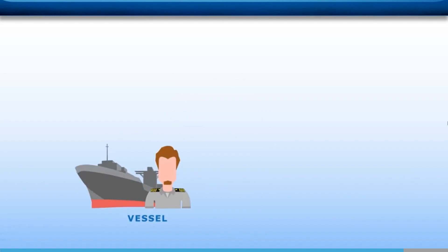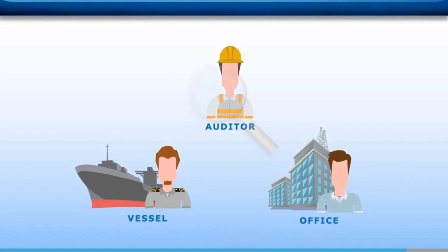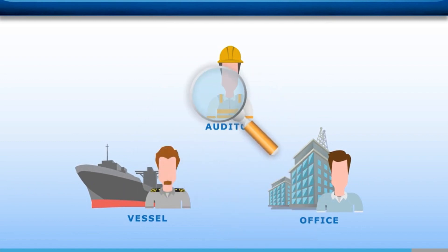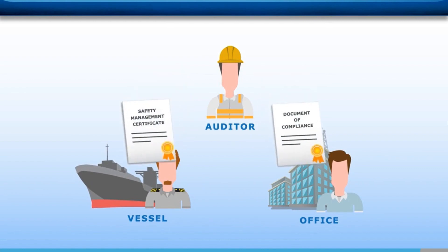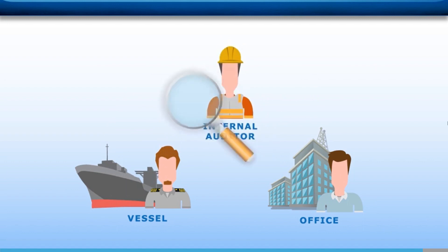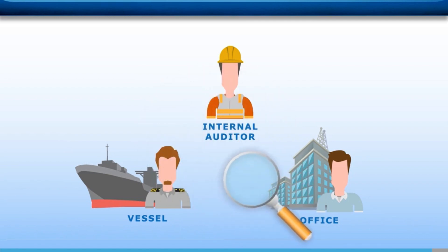Audits are formal checks that verify compliance with the ISM code. Both the office and every vessel have to be audited. After passing the audit, the office gets a document of compliance and the ship gets a safety management certificate. The ship and the office will have an internal audit by company staff at least once a year or an external audit by the class society or flag state. According to the ISM code, this checks that everybody is following the safety management system.